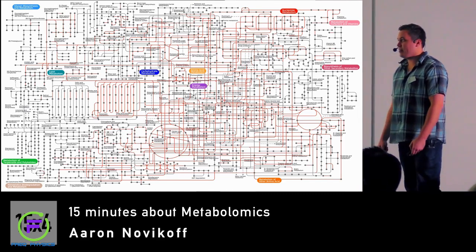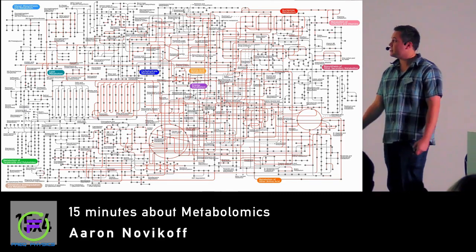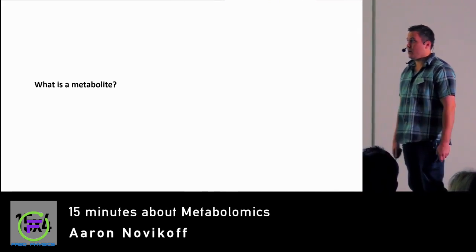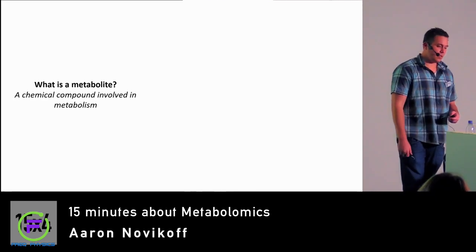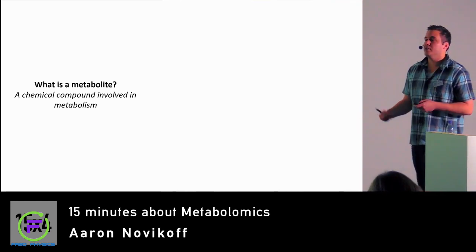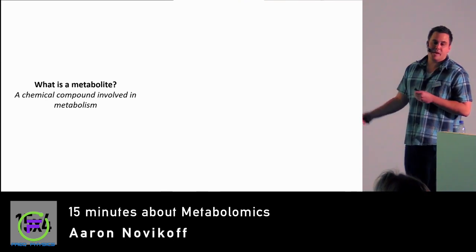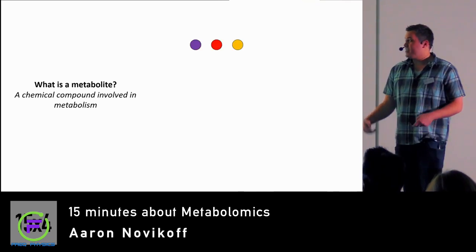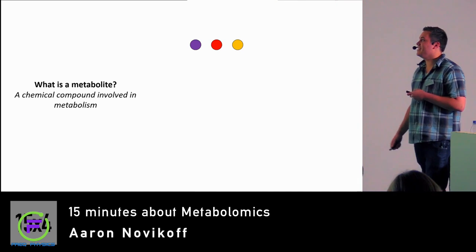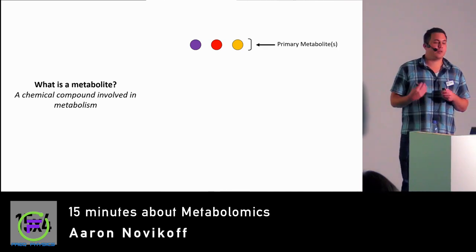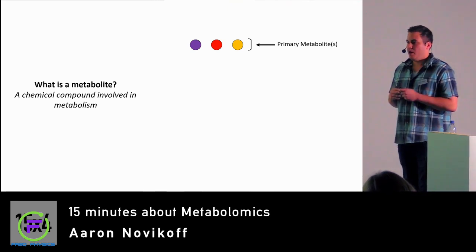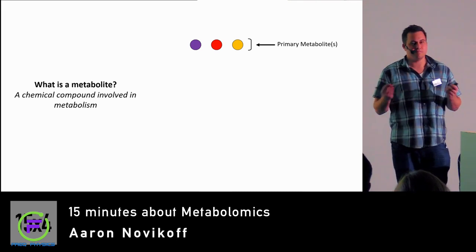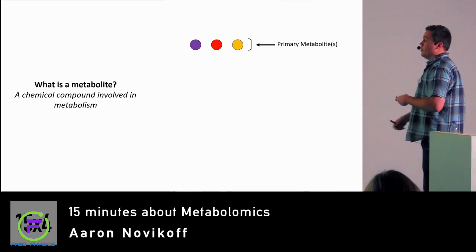What metabolomics does is try to explain a little bit of this. The first word I'll be using quite a bit is 'metabolite.' A metabolite is a substance that occurs within metabolism — it's part of the metabolic process that allows it to continue. We can represent metabolites through these colored circles, and we call these primary metabolites. Primary metabolites are critical for the processes to continue; without these metabolites, you would likely die.